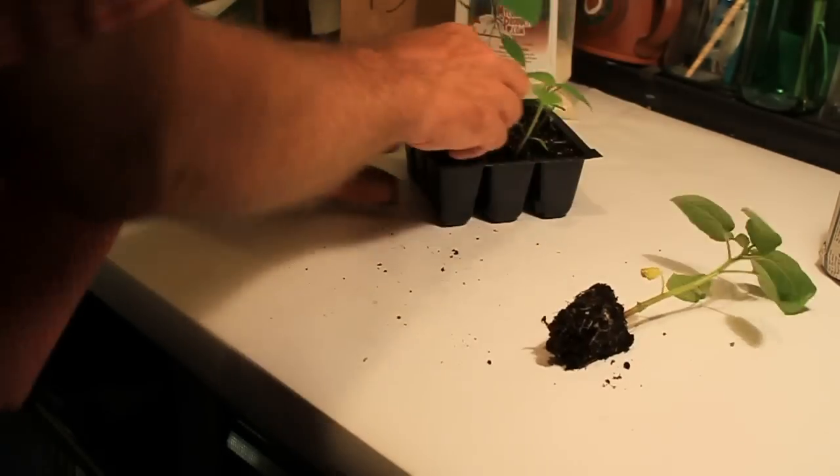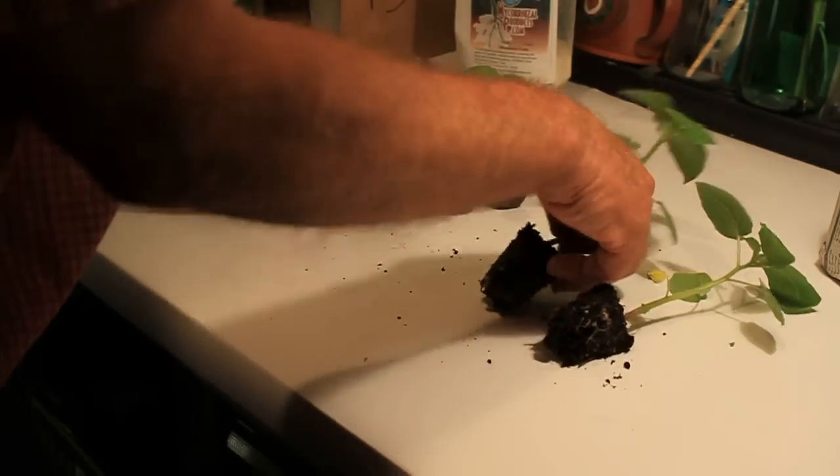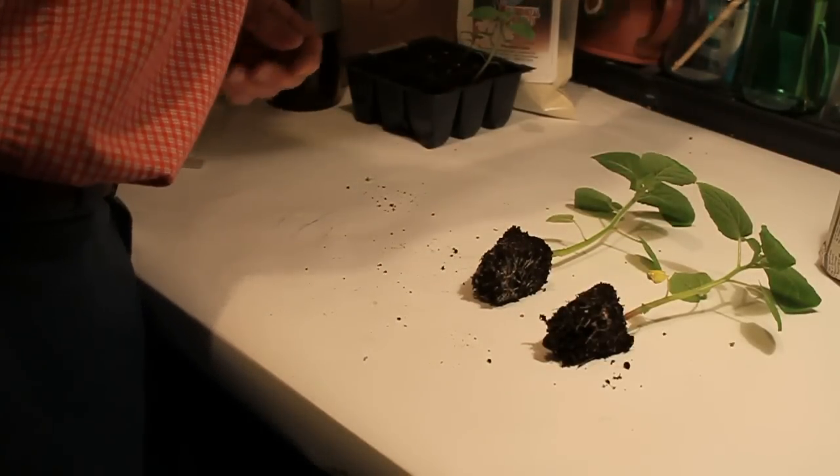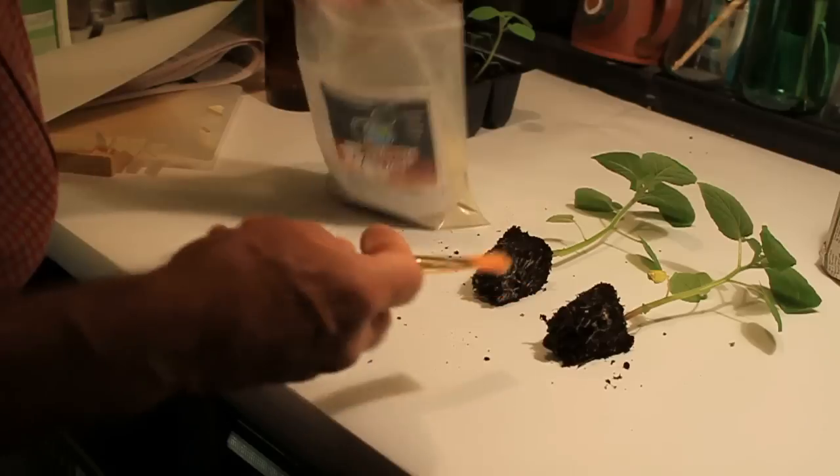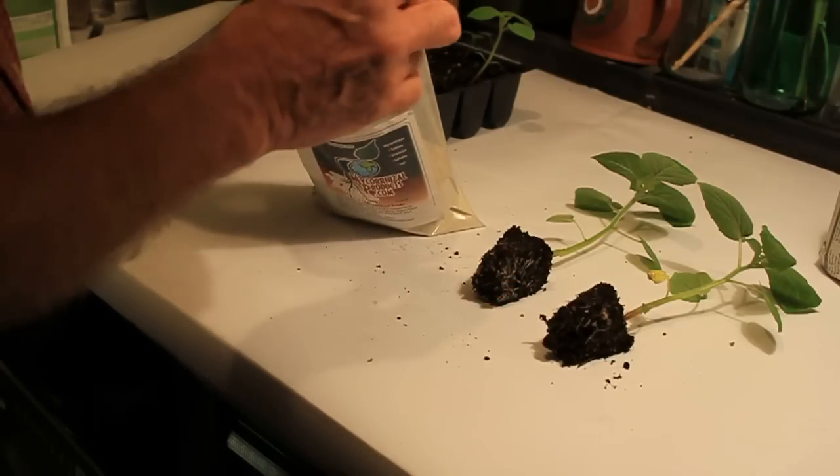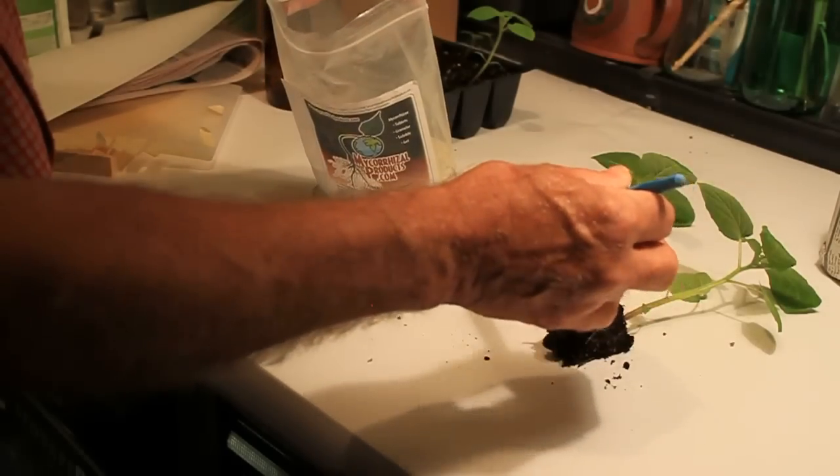Take my little plants here. Pop them out. And just do those two. And I use for the mycorrhizae, I use a paint brush. Normally I dump a little of this out. I don't want to contaminate it with dirt. But I just sprinkle it on the roots.